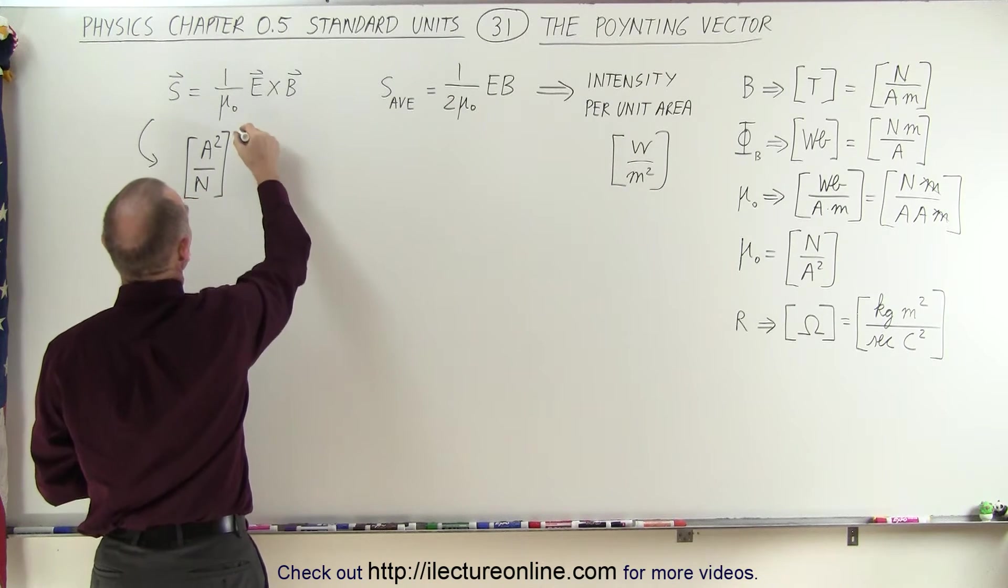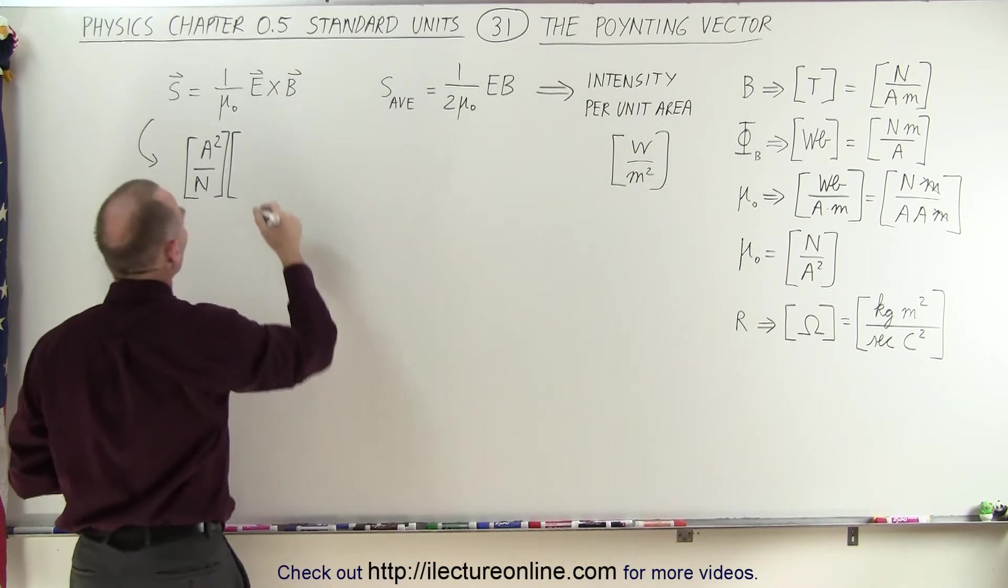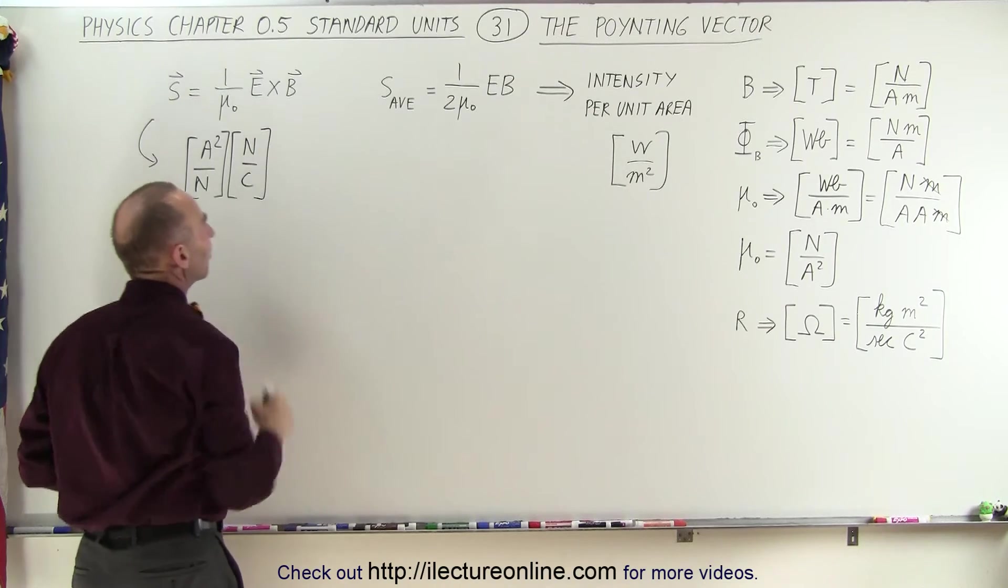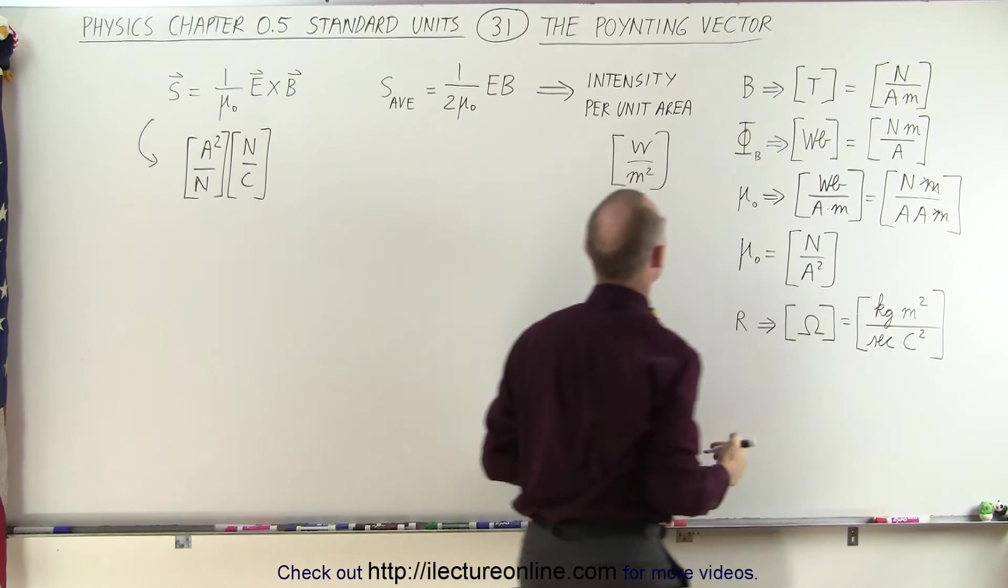The unit for the electric field would be newtons per coulomb. And the units for a magnetic field, that's equal to teslas, and the tesla is defined as newtons per amp times meter.